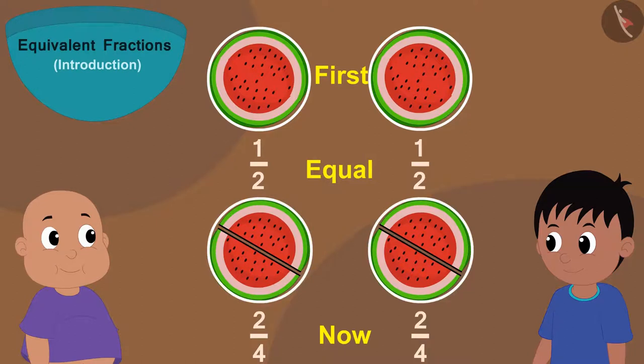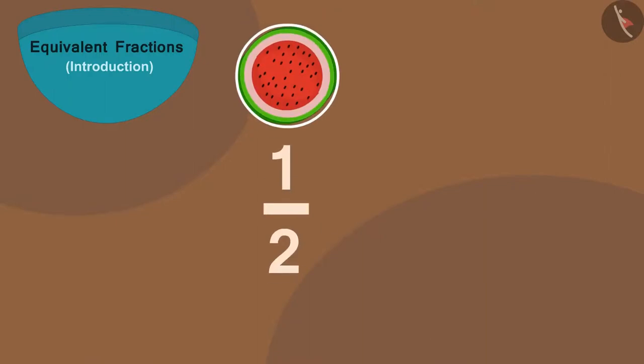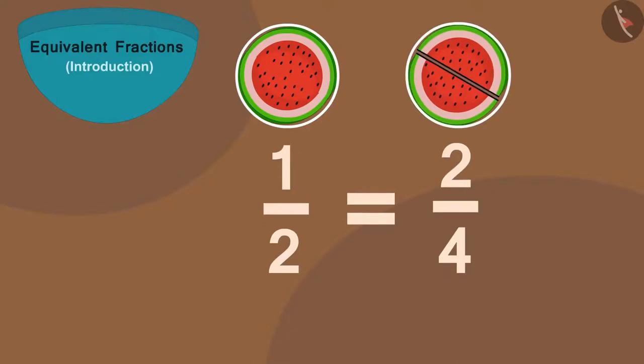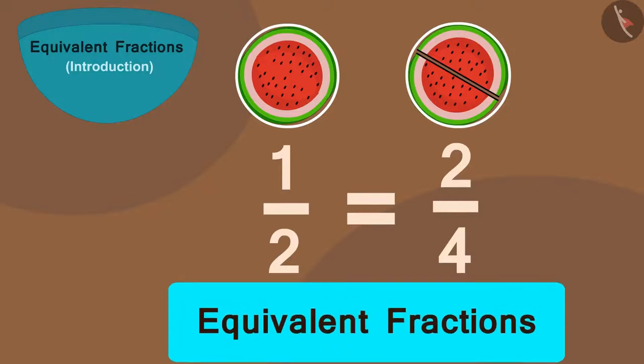And because the amount of watermelon they are getting is still the same, we can write that the fraction one by two is equal to the fraction two by four. Such fractions that are equal are called equivalent fractions.